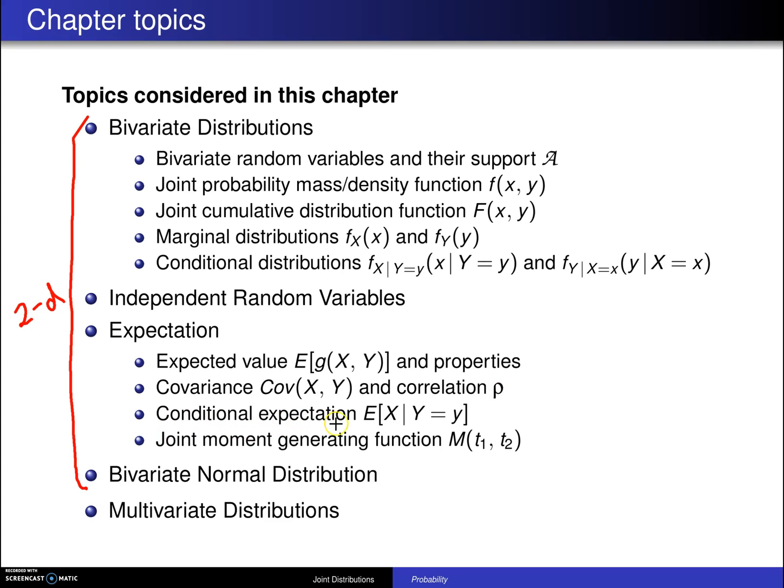There is conditional expectation. And then finally, joint moment generating functions m of t1, t2. The most famous of the bivariate distributions is the bivariate normal distribution. That's covered in the fourth section.